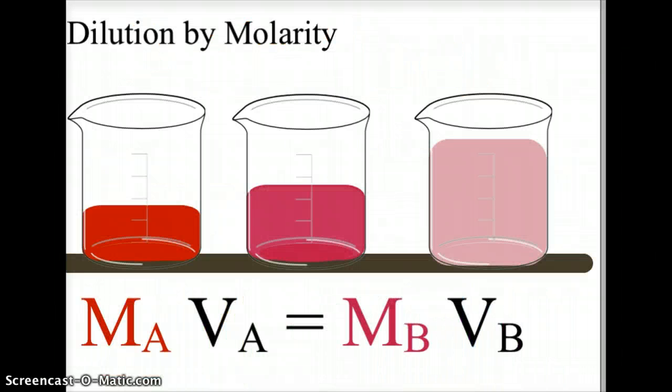So here we have three solutions. The solution on the far left is the most concentrated at the lowest volume. As you add more volume by adding another solvent like water, you can dilute the solution. And then the one on the right is the least concentrated or most dilute because it has the highest volume.